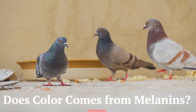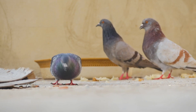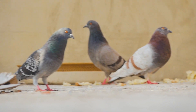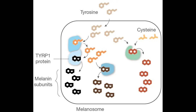Does color come from melanins? Feathers get their colors from pigment molecules called melanins. Melanins are made up of subunits, like building blocks, made from the amino acid tyrosine. Several proteins work together like an assembly line to build the subunits and then put them together to make large pigment molecules. Different types of subunits give each type of melanin its color — black, brown, or red. Most birds make all three types; it's the proportion that gives them their color. Blue pigeons make mostly black melanin, brown pigeons make mostly brown, and ash red make mostly red.